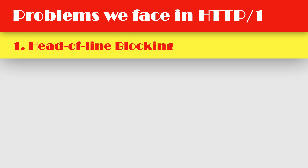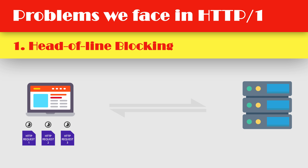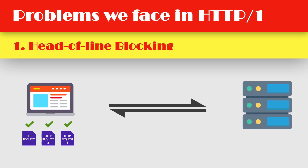Head of line blocking is one of the major issues we all face with HTTP 1. The TCP connection is blocked by the preceding request until the server responds to it.